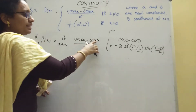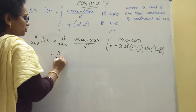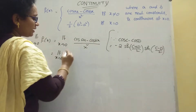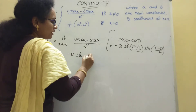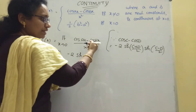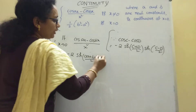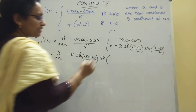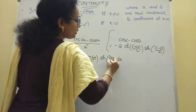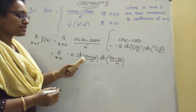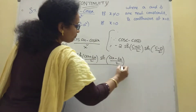Now apply this: C is ax and D is bx. So limit x tends to 0 of [−2 · sin((ax+bx)/2) · sin((ax−bx)/2)] divided by x². We substitute and get: limit x tends to 0 of −2 · sin((a+b)x/2) · sin((a−b)x/2) divided by x².